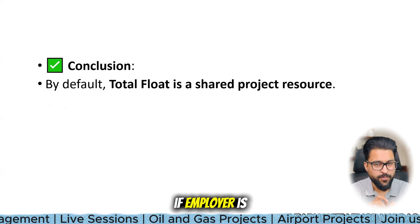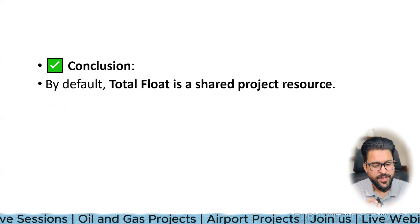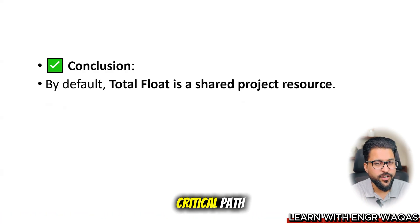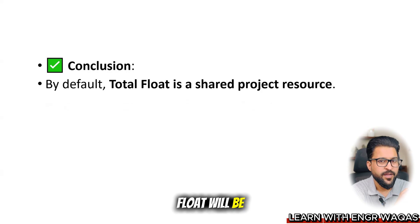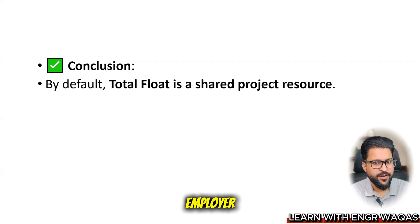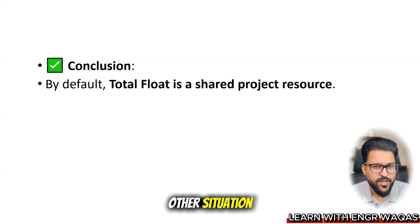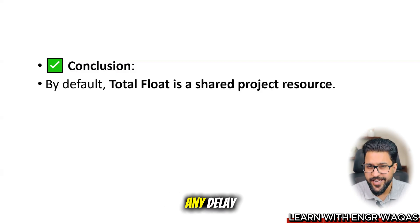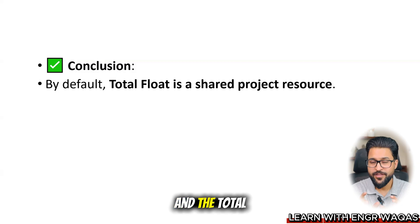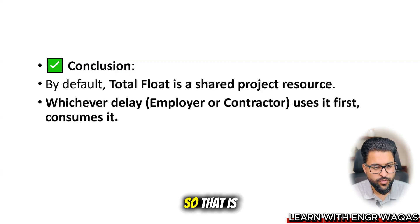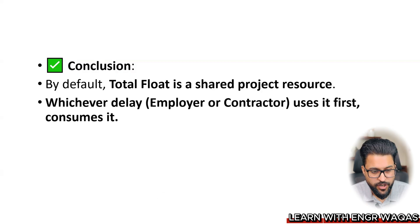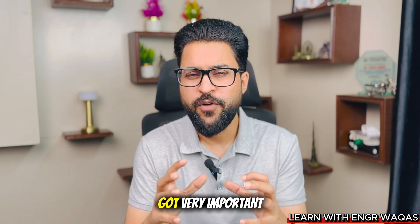In conclusion, by default total float is a shared project resource on a first-come, first-served basis. If the employer causes a delay on the non-critical path, total float flows toward the employer's side. If the contractor causes a delay and total float exists on the non-critical path, it goes toward the contractor's side. That is the simple situation and conclusion.